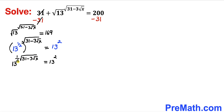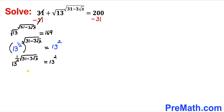Now let's make an observation: the bases on both sides are identical. As long as the bases are identical, we can equate the exponents. So we can write: 1 divided by 2 times the square root of 31 minus 3 times square root of x equals 2.